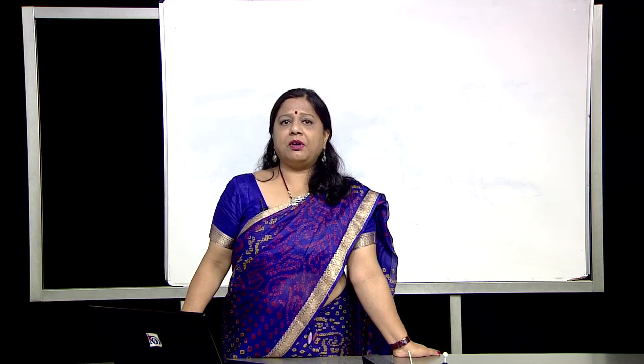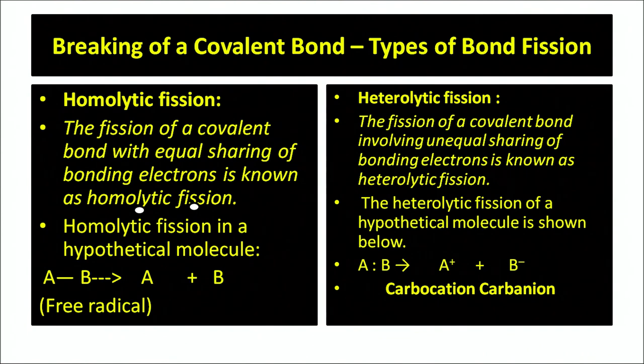Breaking of covalent bond — types of bond fission. When you are breaking a covalent bond, there are two types: homolytic fission and heterolytic fission. The fission of a covalent bond with equal sharing of bonding electrons is known as homolytic fission. Whereas in heterolytic fission, there is unequal sharing of bonding electrons.